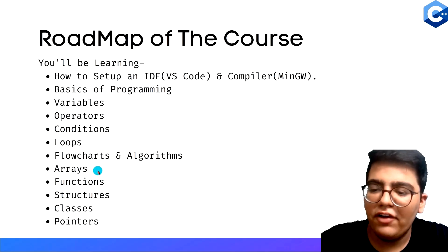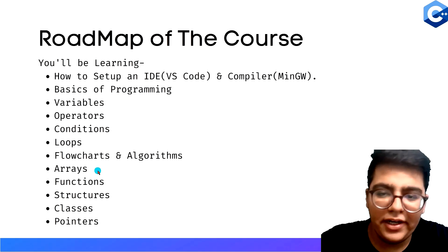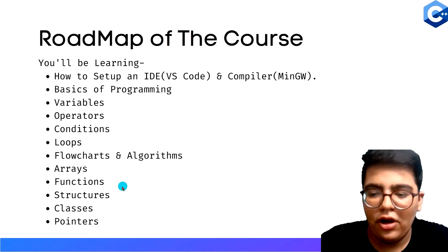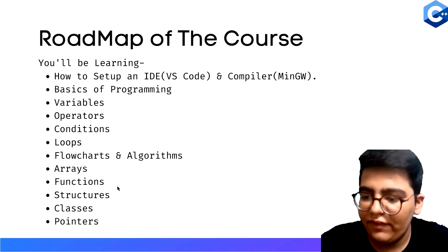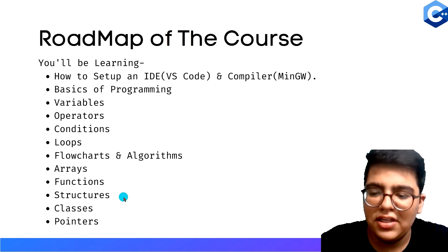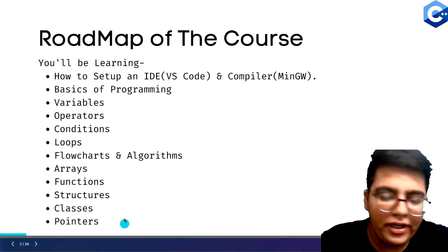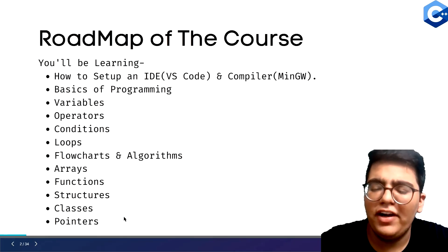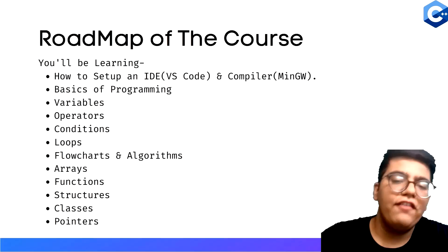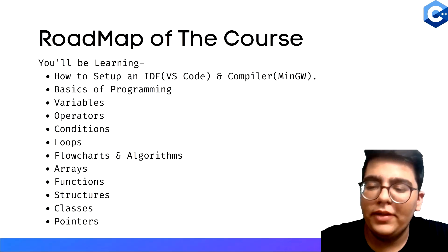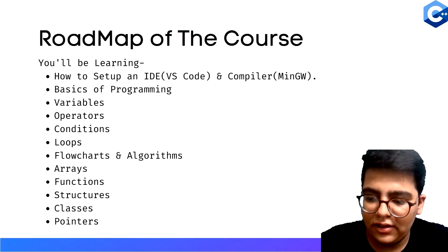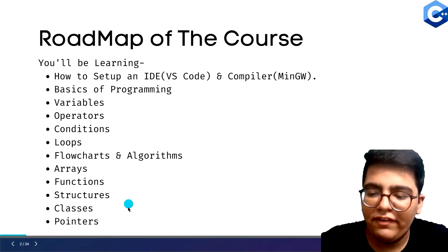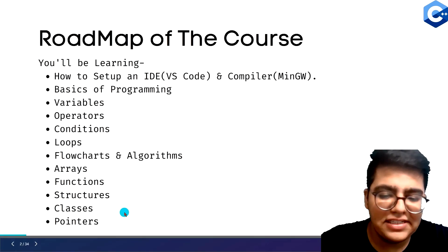We've got arrays — I've covered 1D arrays and multidimensional arrays. I've covered functions: how we can call functions and how we can pass by reference. Then we have covered structures, classes, and pointers, which are part of object-oriented programming. Many people find it difficult — I found it to be the most difficult topic in the entire syllabus — and I have tried to simplify it as much as I can.